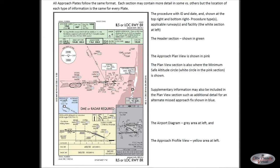You're maintaining 3,000 feet until you're at COPRA, where you begin your descent. The section below the profile is the table for minima based on the category of the aircraft. It shows the minimums for the type of approach — here, a straight-in ILS or a straight-in localizer — with the minimum altitude and minimum runway visual range of 5,000 feet, or approximately one statute mile.